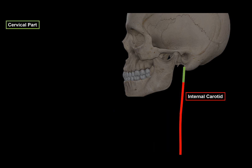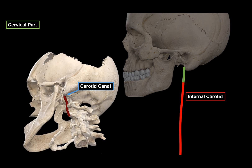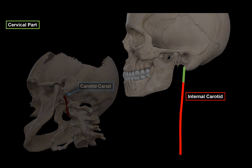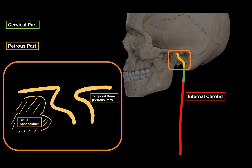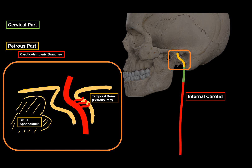The first part is the cervical part, in the neck region, hence the name. It goes up and then enters the carotid canal, where it becomes the petrous part. The carotid canal is initially a canal within the petrous part of the temporal bone — this is a coronal section of the canal. The internal carotid continues up through the canal and gives off some important side branches.